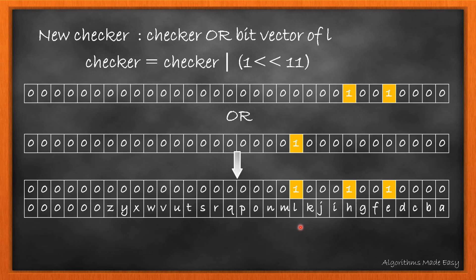We can again see that the checker will now have 1s for bits representing 'h', 'e', 'l'.